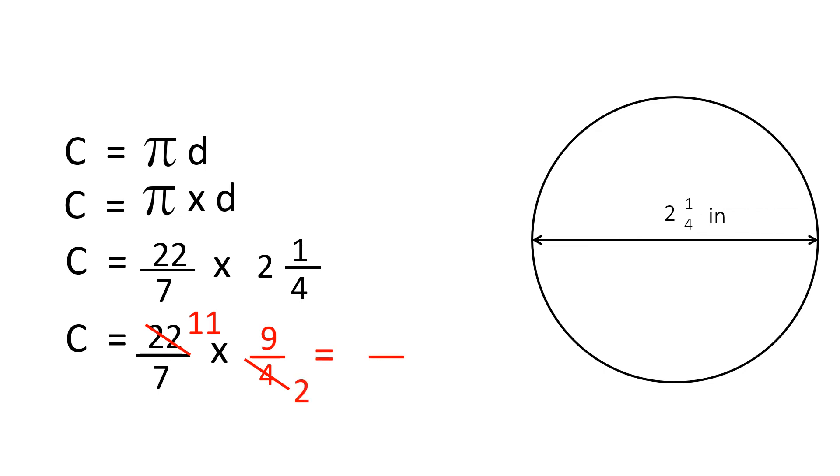Next, we multiply across. Let's start from the top numbers. 11 times 9 will equal 99. The bottom number, 7 times 2 will equal 14.